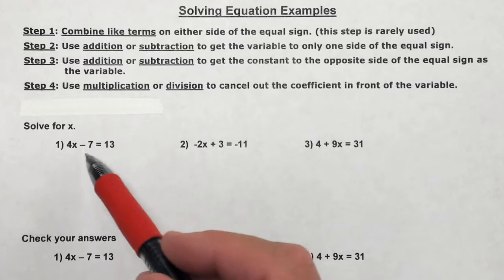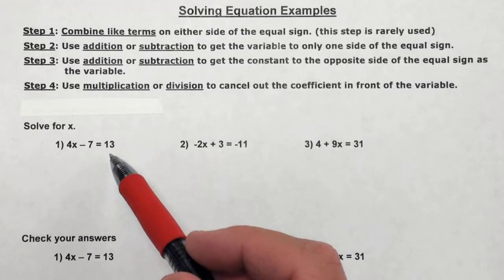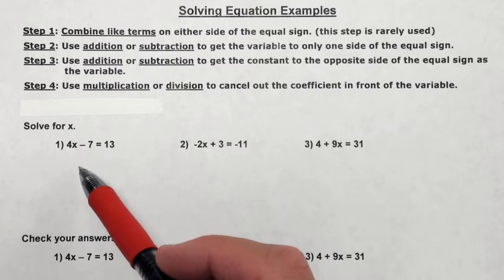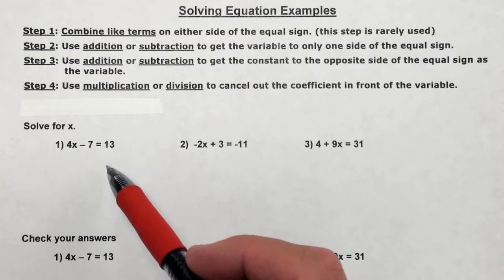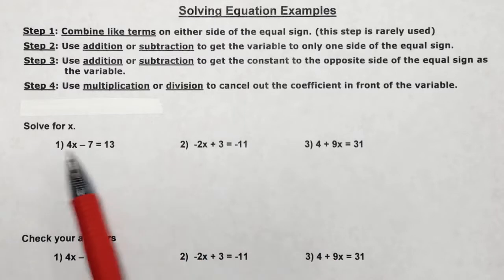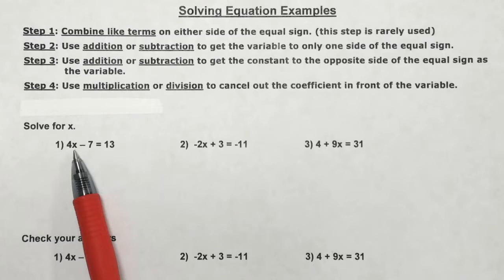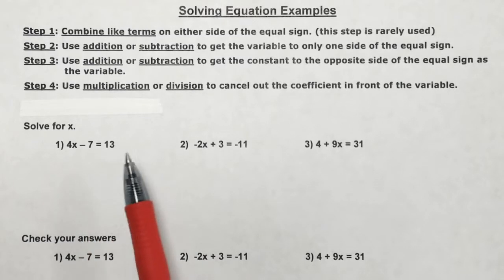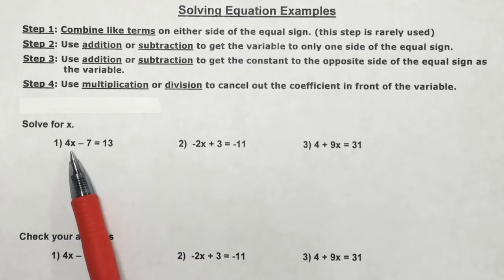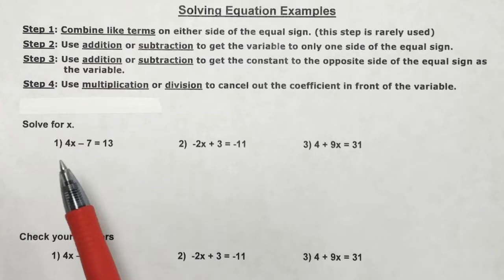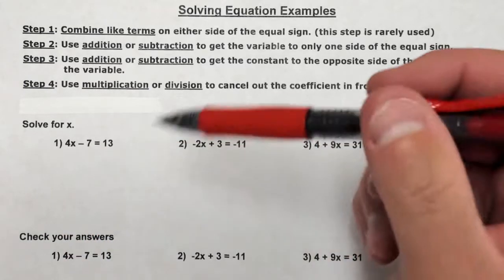Number one: I have 4x minus 7 equals 13. My goal is when I'm done, I have x on one side equals a number. Whatever value I get for my answer, I should be able to plug it back into the equation and it should balance out. If you know right offhand what number to plug in to make the left side equal 13, maybe that's the way to do it. But typically it takes a little bit of work.